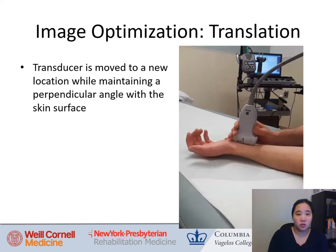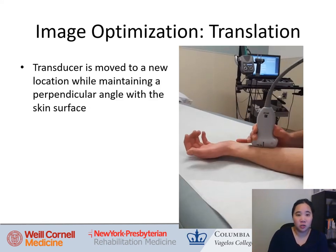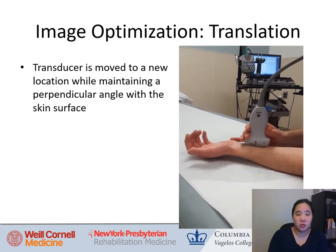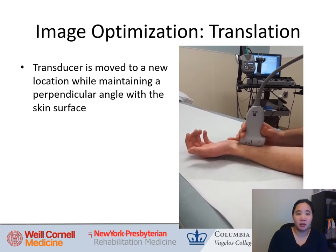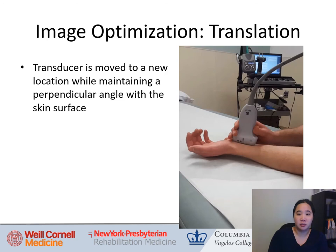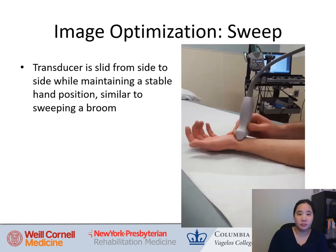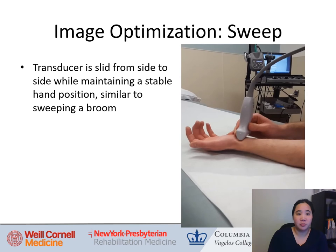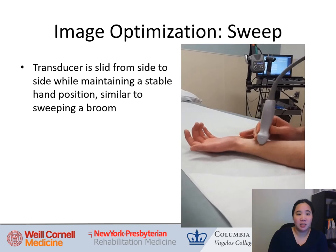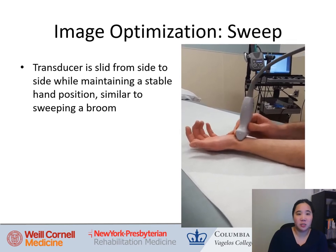Translation involves moving the transducer to a new location while maintaining a perpendicular angle with the skin surface. Sweep involves sliding the transducer from side to side while maintaining a stable hand position, similar to sweeping a broom.